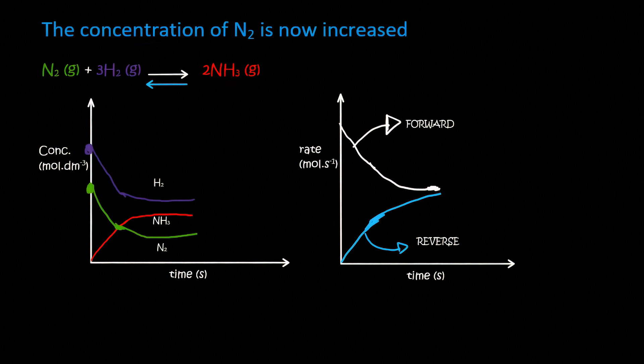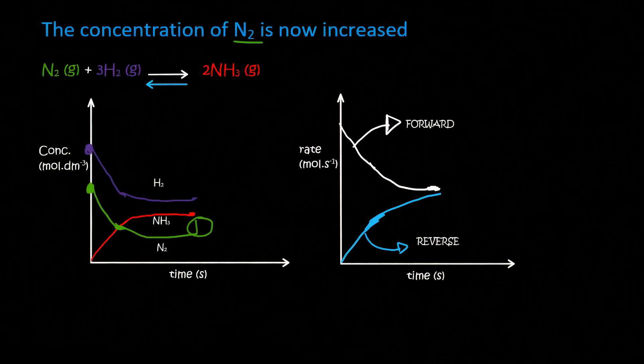The way it's going to work is the following: we are increasing the concentration of N2. That is an immediate change, and straight away you can see that there has been an increase in the nitrogen. Now the system is a little bit upset because it's out of equilibrium, and it's going to react to try to get to equilibrium again. So we increased the concentration of nitrogen, and the system is now going to try to decrease the amount of nitrogen. Will the forward or the reverse reaction be favoured?